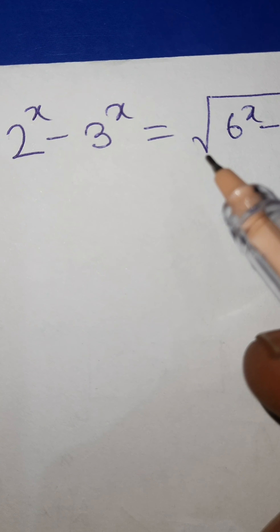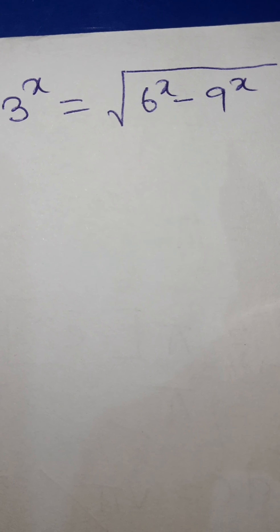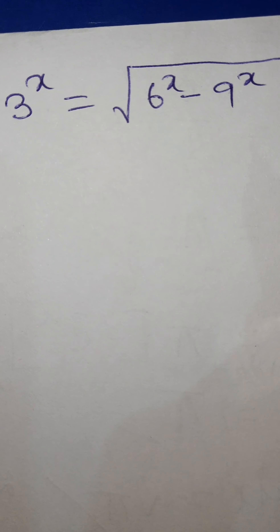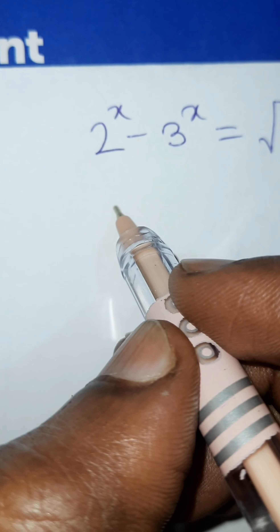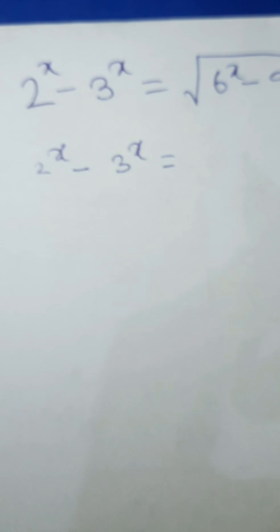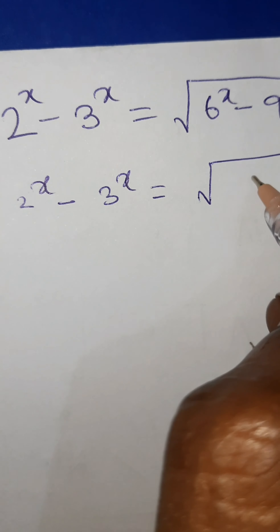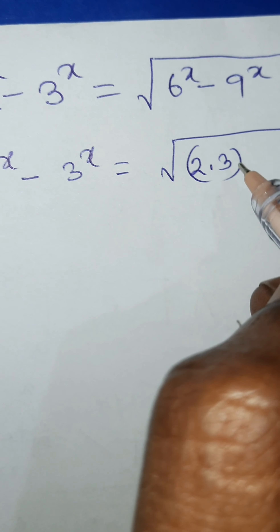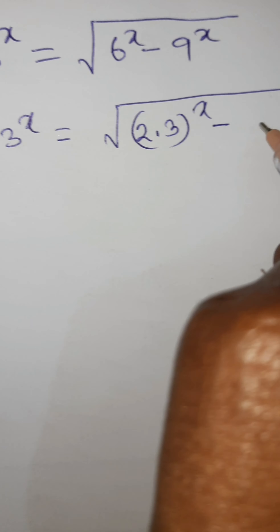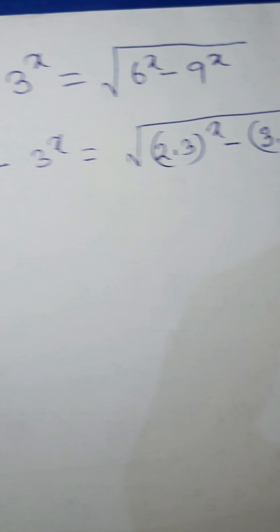Solve this equation: 2 to the power x minus 3 to the power x is equal to the square root of 6 to the power x minus 9 to the power x. We can write 6 to the power x as 2 times 3 to the power x, and 9 to the power x as 3 times 3 to the power x.